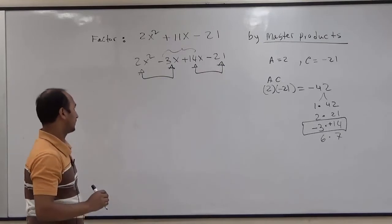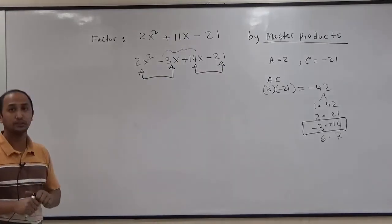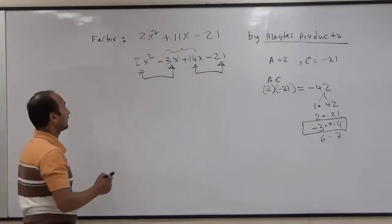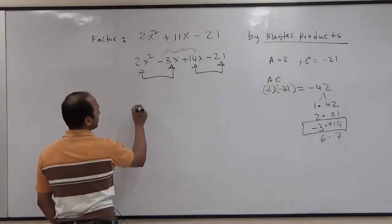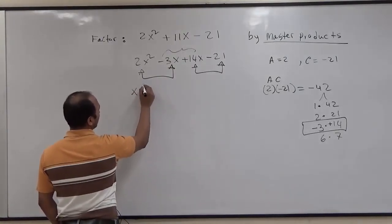So from the first group, we'll factor out the GCF. And in this case, the GCF from the first group will have x.